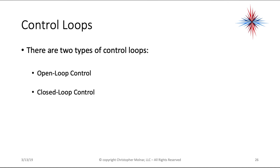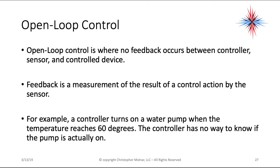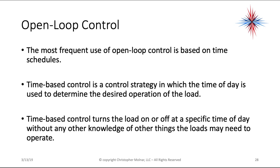There are two types of control loops. Open loop control is where there's no feedback occurring between the controller, sensor, and control device. Feedback is a measurement of the result of a control action by the sensor — for example, a controller turns on a water pump when temperature reaches 60 degrees, but has no way of knowing if the pump is actually on. The most frequent use of open loop control is time-based scheduling, which turns loads on or off at specific times without knowledge of other operating conditions.